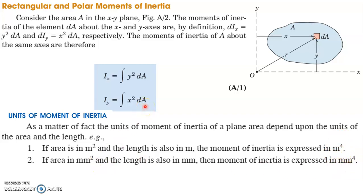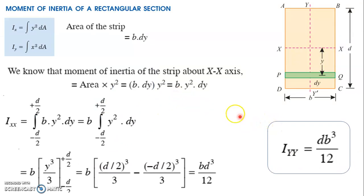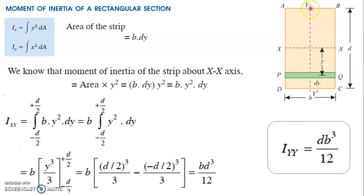We have to study three basic cross-sections to derive moment of inertia equations for solving problems. First, we will calculate the moment of inertia of a rectangular cross-section. Here I have a rectangle ABCD with the x-axis and y-axis passing through the centroid of the section. An axis passing through the centroid is called a centroidal axis — you may have a question on this in the examination. In this rectangle, the axes are marked at the center.